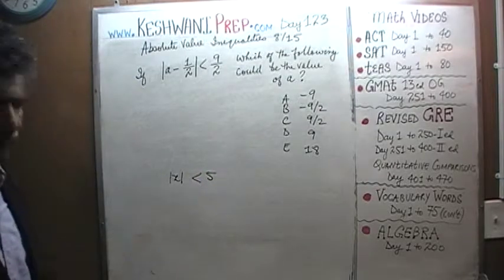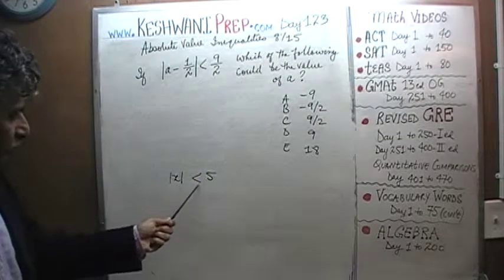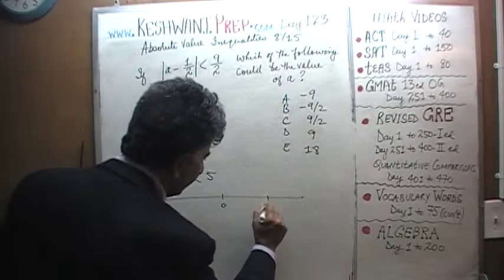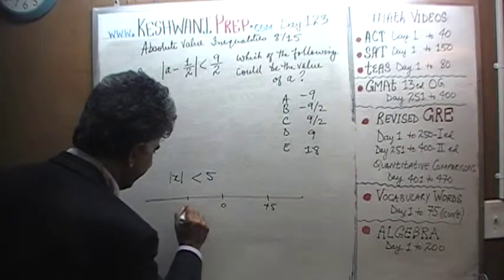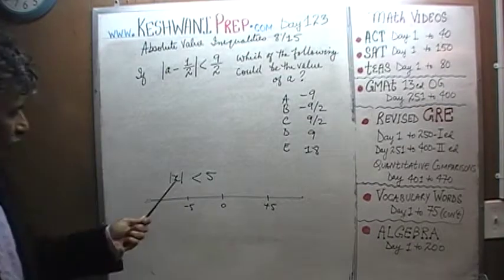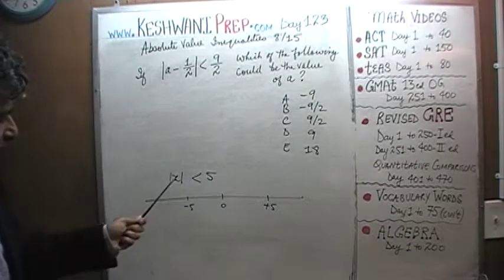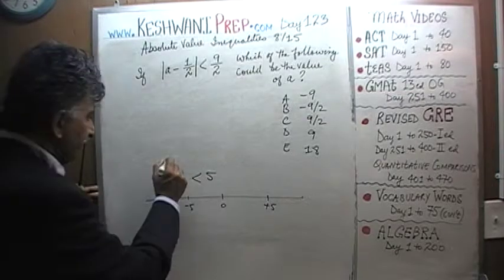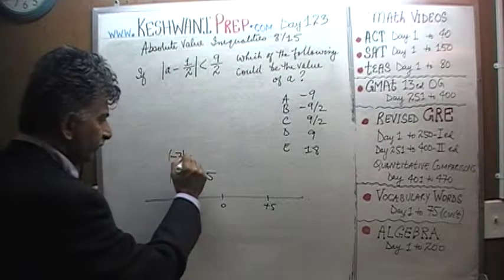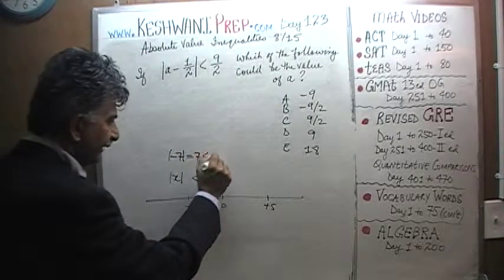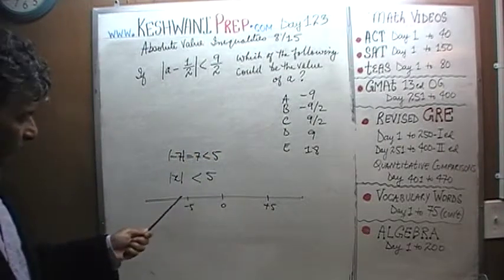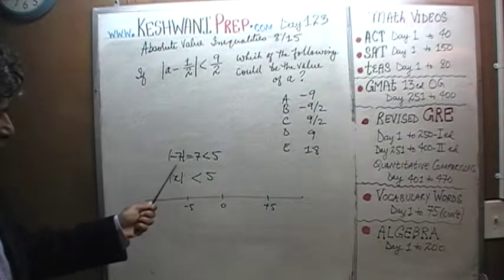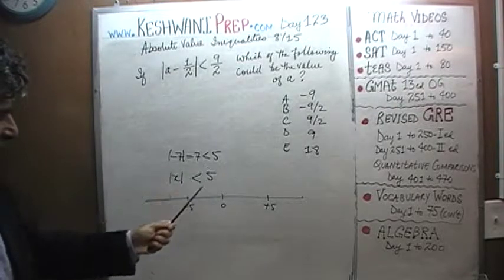Very simple, very straightforward. We are told that the absolute value of X is less than five. Looking at the number line: here is zero, here is positive five, here is negative five. Can X be negative seven? The answer is no — the absolute value of negative seven is seven, and seven is not less than five. Can it be negative four? Yes — the absolute value of negative four is four, which is less than five.